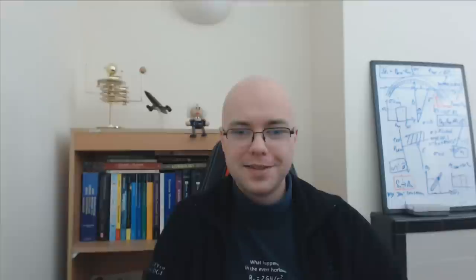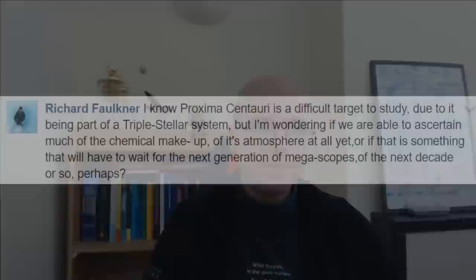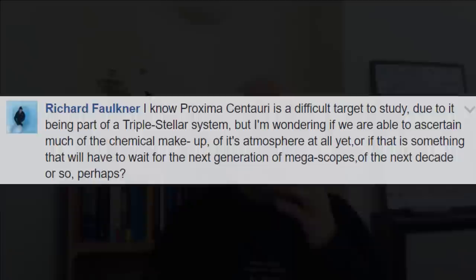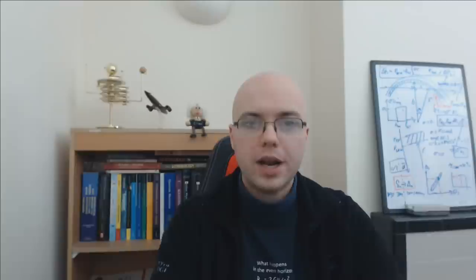A question from Facebook from Richard about Proxima Centauri b, which made a big splash last year: can we currently analyse the chemical makeup of Proxima b's atmosphere? If Proxima b transited, then potentially yes — but unfortunately it doesn't seem to transit. So that means we do actually have to wait a few years, or use alternative approaches.